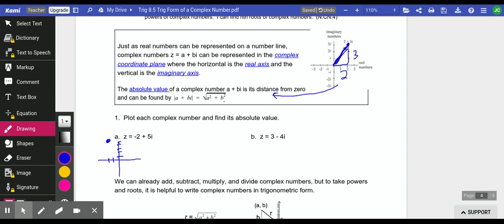Now we want to find the absolute value. The absolute value is the distance from 0. To find that, the absolute value of z is the square root of negative 2 squared plus 5 squared. That's just that modified Pythagorean theorem. So absolute value of z is the square root of 29.